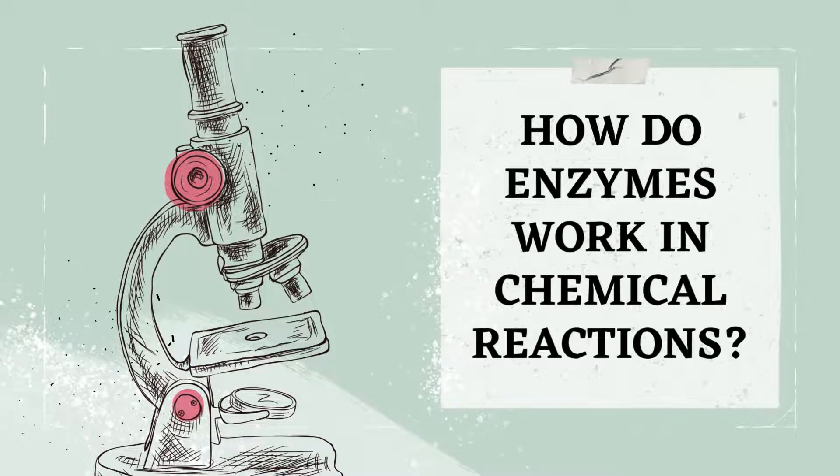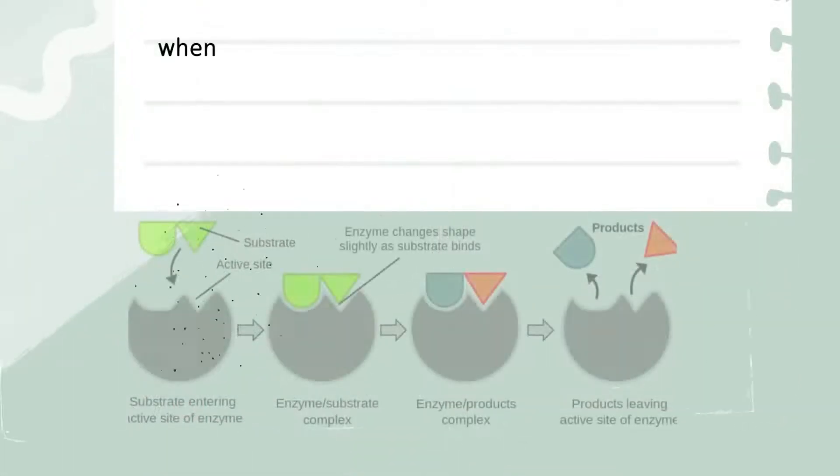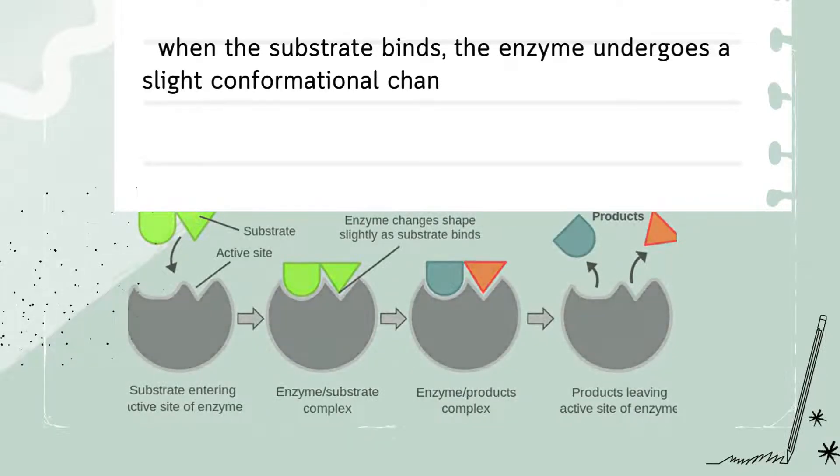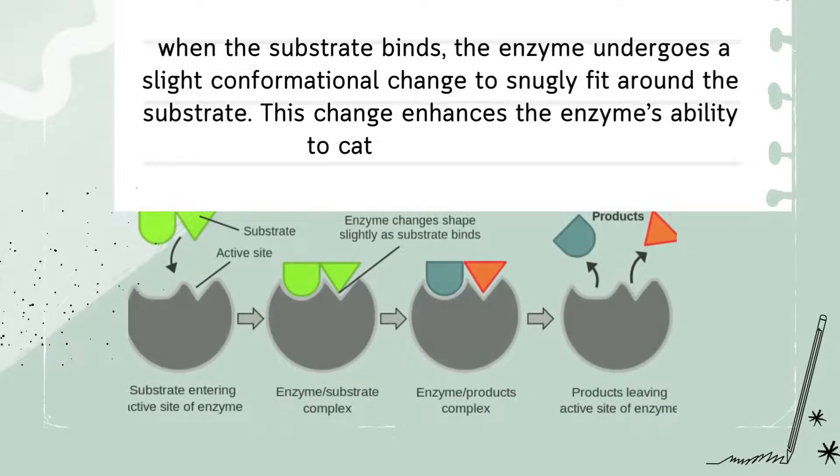How do enzymes work in chemical reactions? Enzymes bond with chemical reactant called substrate forming enzyme-substrate complex. This complex's transition state and substrate is converted into product while releasing enzyme for another round of chemical reaction.